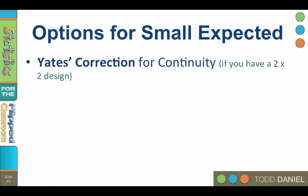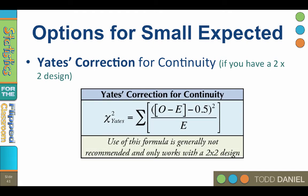Finally, you can use something called Yates' correction for continuity. Yates' correction changes the difference between O minus E — it adds 0.5 if O is greater than E, and subtracts 0.5 if O is less than E. If you want to use Yates' correction, there are two things you should know. First, it can only be used if you have a 2x2 design, not a one-way chi-square or a large cross-tabulation. Second, Yates' correction tends to over-correct, leading to more type 2 errors, and because of this, the use of Yates' correction is generally considered unnecessary. I'd recommend against using it.